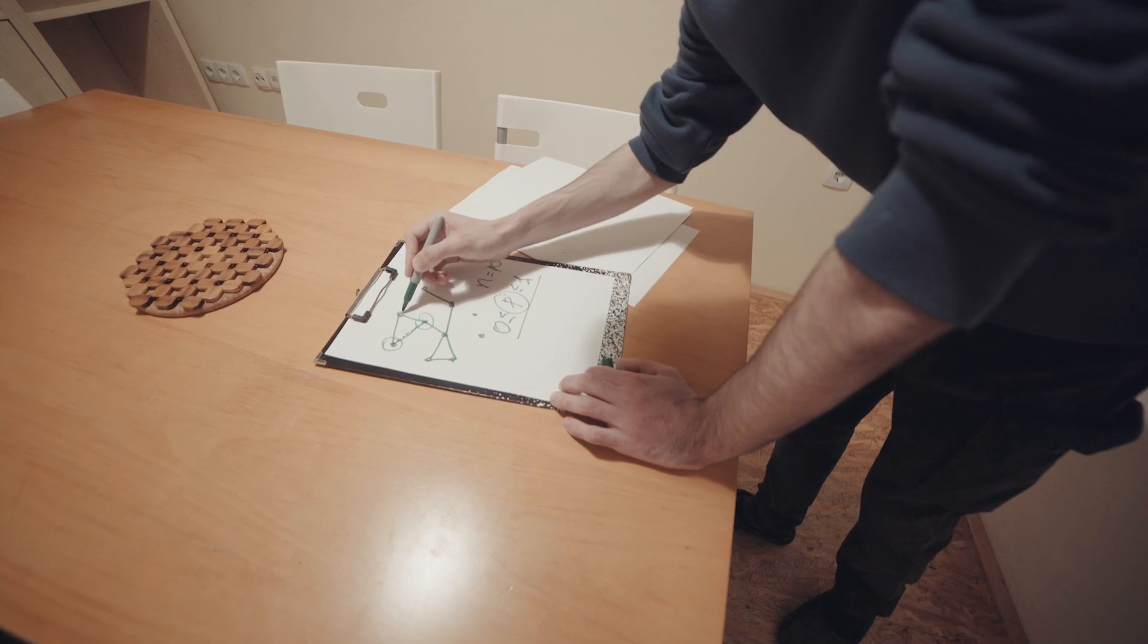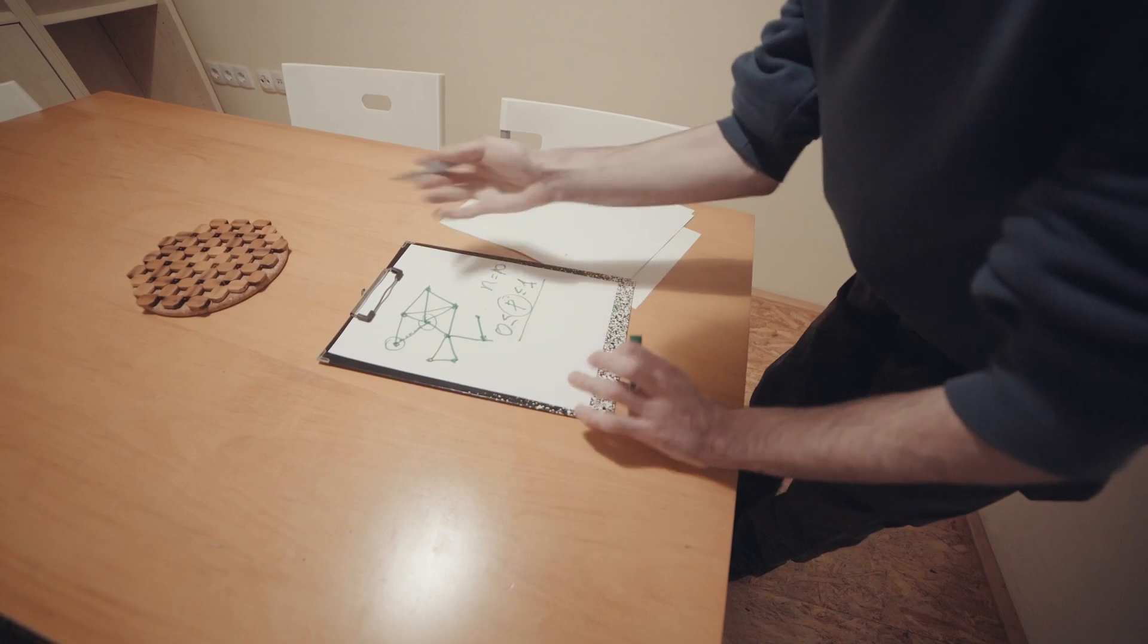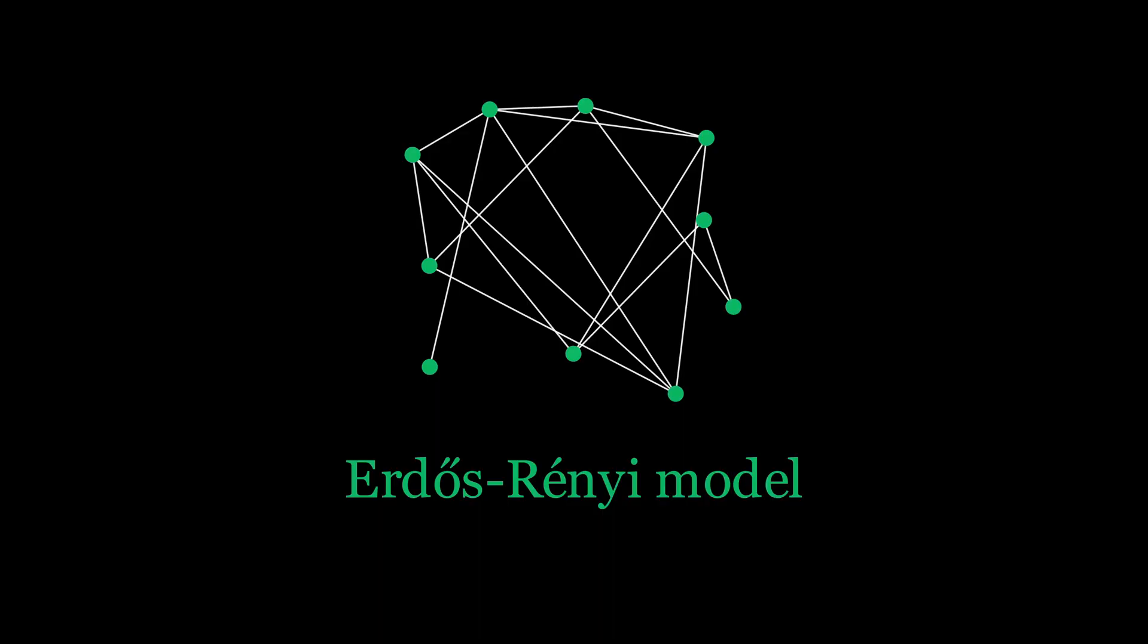Then there is maybe here, there is like this an edge, and then like that. And then these are random. So with some probability, there is an edge.